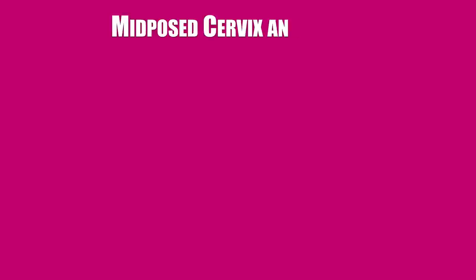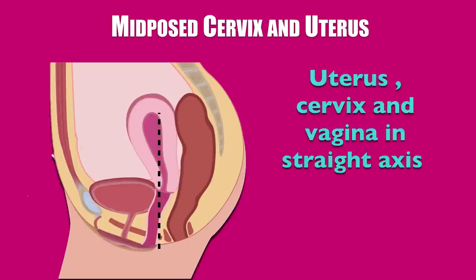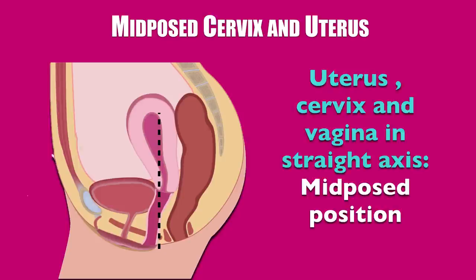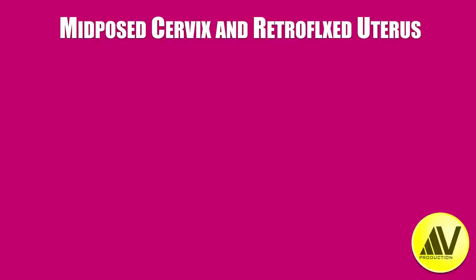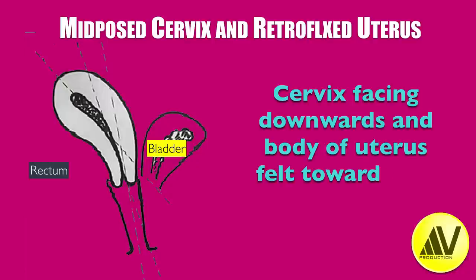One of the rarest positions felt on bimanual examination is the mid-post position, where the body of the uterus, cervix and vagina form more or less a straight axis, as seen in this diagram. This diagram illustrates a mid-posed cervix and a retroflexed uterus. On bimanual examination, if the cervix is only pointing downwards and the body of the uterus is towards the rectum, it is called a mid-posed cervix with retroflexed uterus. This is also an uncommon position.